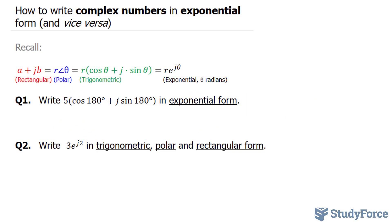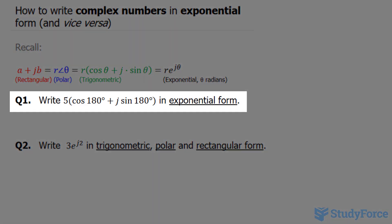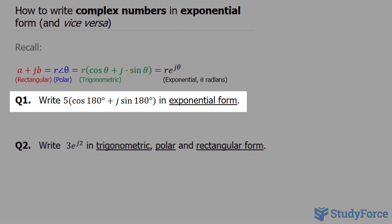In this video, I'll show you how to write complex numbers in exponential form. Question 1 reads: write 5 cosine 180 degrees plus j sine 180 degrees in exponential form.